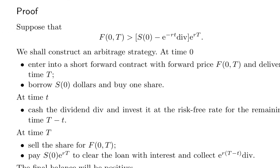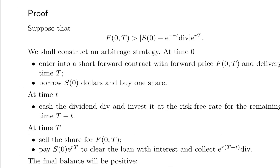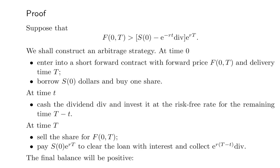Proof of this theorem. Suppose that F(0,T) is greater than (S0 − e^(−rt) · div) · e^(rT). We shall construct an arbitrage at time t.